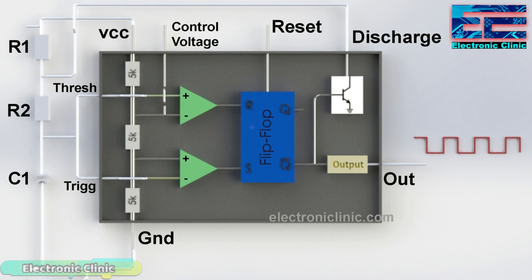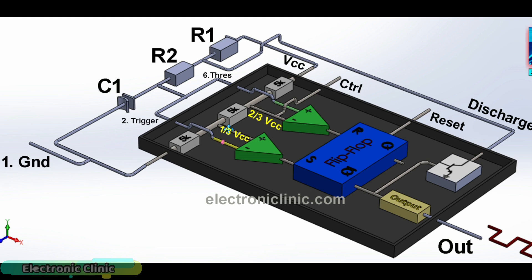When we power up the circuit, resistors R1 and R2 will start charging the capacitor C1. During the charging process, the voltage on the trigger pin of the 555 timer remains lower than one-third of the VCC. Due to this, the comparator outputs 1 which is given as input to the flip-flop, and Q-bar gives 0, keeping the transistor in the off state while the output of the 555 timer IC remains high. This output will remain high until capacitor C1 charges to the point where the voltage on the trigger pin gets higher than the voltage on the non-inverting input of the second voltage comparator.